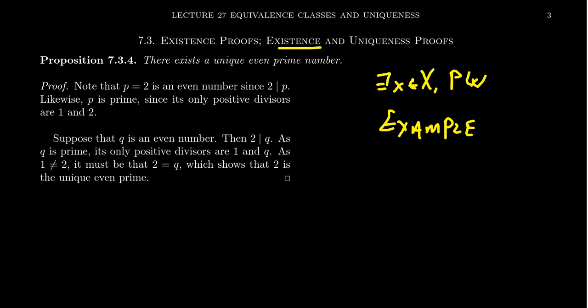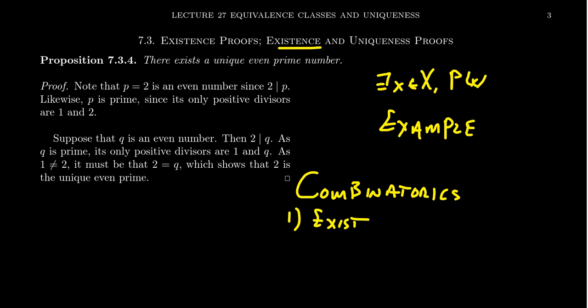Proving existence tells you there's at least one object that satisfies the conditions, but how many are there total? That question gets into combinatorics. Every combinatorial problem has three phases. The first phase is existence: does this combinatorial object even exist or not?